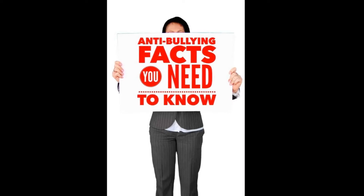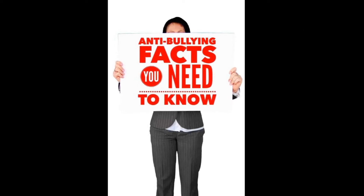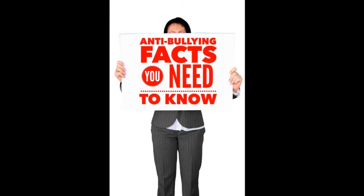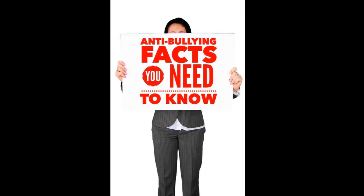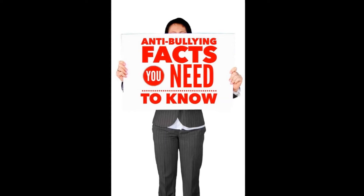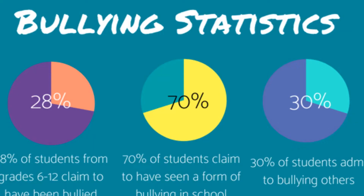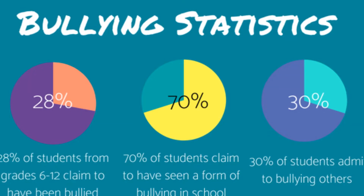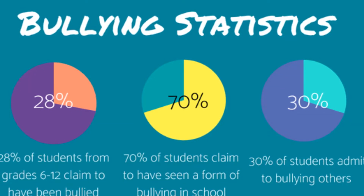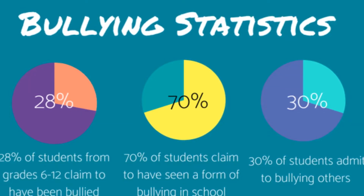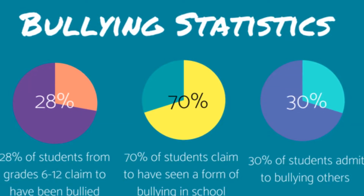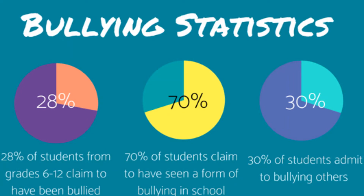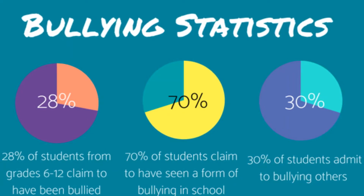So how common is bullying? According to PACER's National Bullying Prevention Center, one out of every five students reports being bullied. The reasons for being bullied most often include physical appearance, race, ethnicity, gender, disability, religion, and sexual orientation.